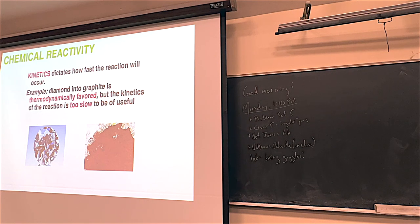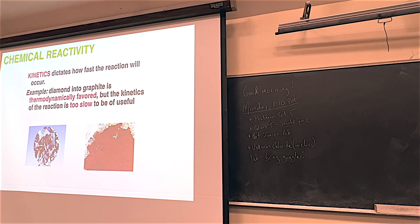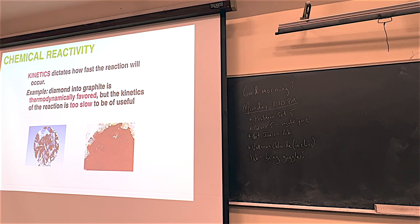When thermodynamics says it's thermodynamically favored to break down, that means the ambient energy from the environment is enough to break it down over time - just naturally, like a radioactive isotope. You could slow it down by changing the temperature. You can put it in a vacuum or in space - it's going to happen, but you can slow it down with temperature. We'll talk more about this in Chem 222.